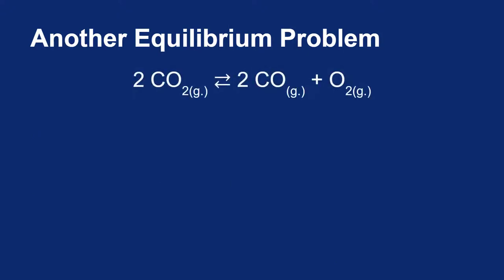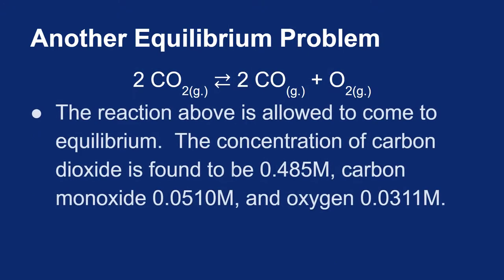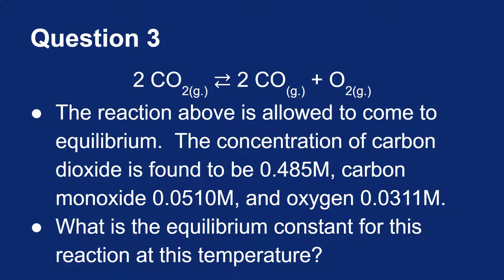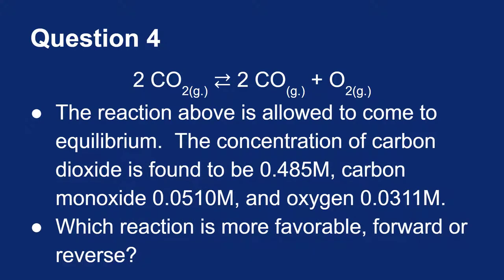Let's look at another example. Carbon dioxide decomposing to make carbon monoxide and oxygen. We let this come to equilibrium and measure the concentrations of all species. Let's find the equilibrium constant and figure out which reaction is more favorable, forward or reverse.